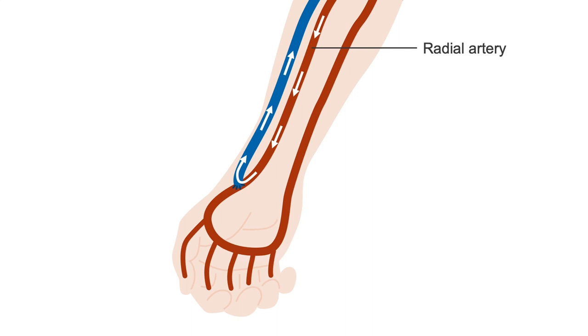For a radiocephalic fistula, you know from your preoperative palmar arch test that if there is a steal in the radial artery, then the ulnar artery will be able to take over supply to the hand. This means that sometimes steal in the radial artery is asymptomatic.